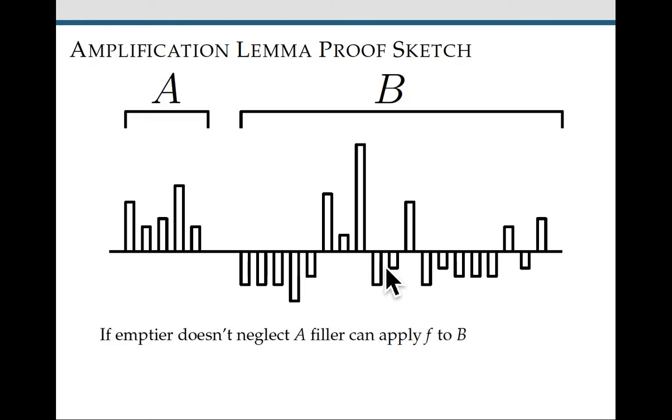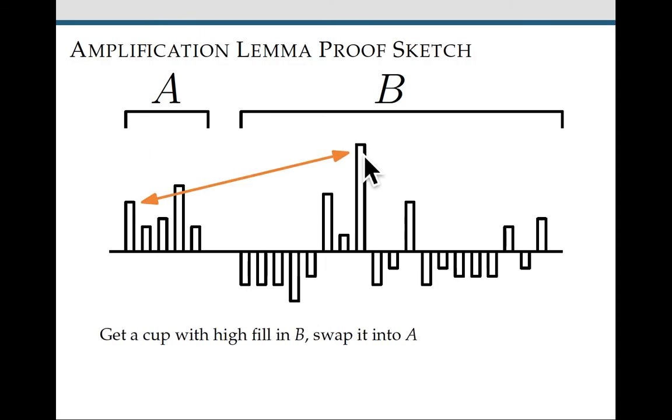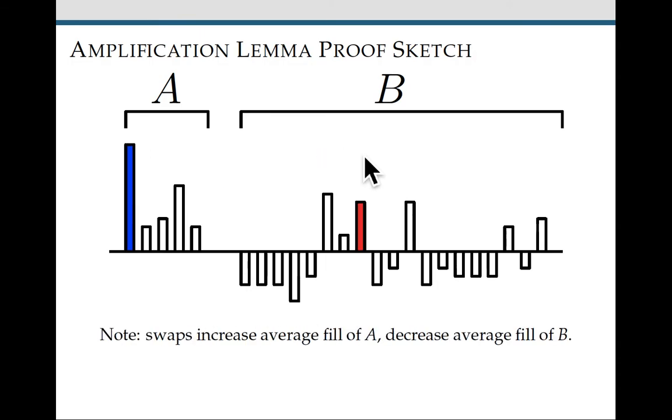So let me show you what it means to apply f to b. If a is not changing because the filler and the emptier are placing one unit of one resource into each cup in a, then we can genuinely apply f to b. We can just pretend like a doesn't exist and use the filling strategy f on b, and then we get some cup with high fill, and then we can take it and swap it into a.